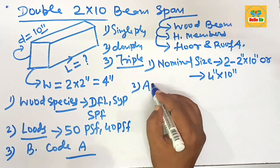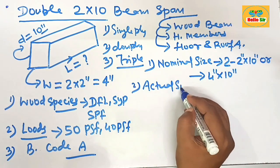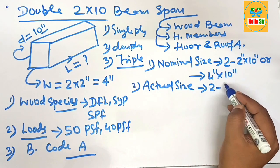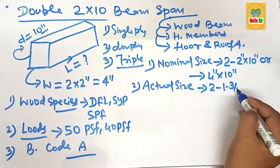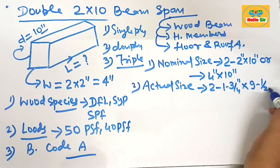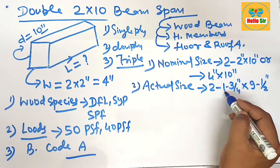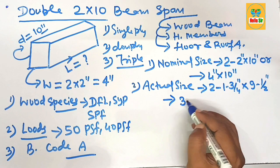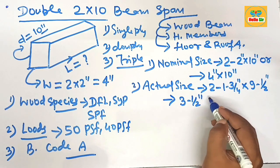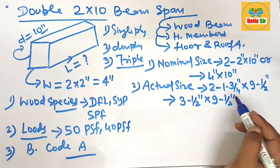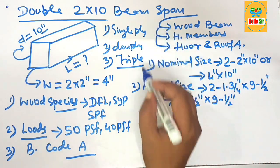And what is the actual size? Actual size of this beam is 1 and 3/4 inches times 2, and 9 and 1/2 inches. This one is the depth and this one is the width. This can also be written as 3 and 1/2 inches width and 9 and 1/2 inches deep.